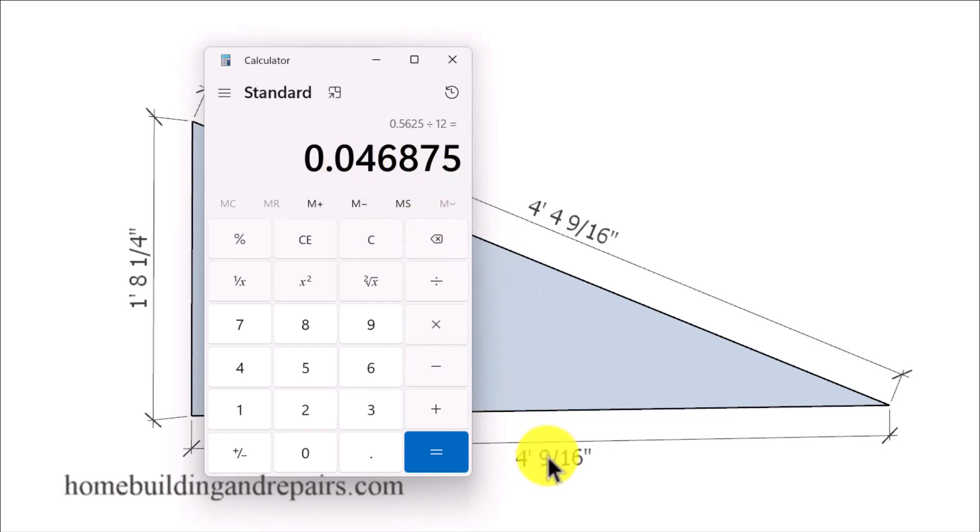So this decimal here represents nine sixteenths of an inch. I'm going to simply add 4 to it, 4 feet right here, 9 sixteenths. And since I have a 5 and 12 roof pitch, if you have a different roof pitch you're going to enter that number here. I'm simply going to multiply this number times 5. And that's going to give me this number right here.